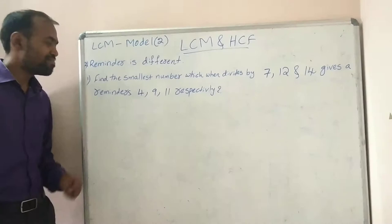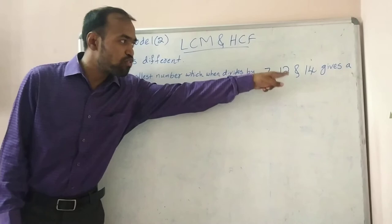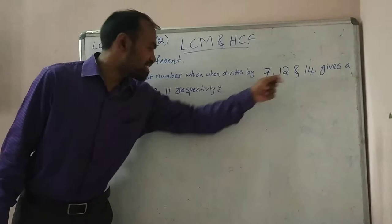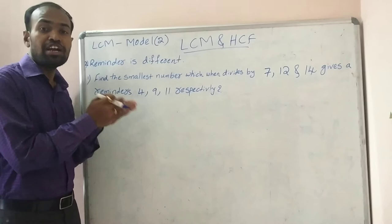Now LCM second model, where the remainder is different. Find the smallest number which when divided by 7, 12, and 14 gives remainders 4, 9, and 11 respectively. So: dividing by 7 gives remainder 4, dividing by 12 gives remainder 9, and dividing by 14 gives remainder 11.